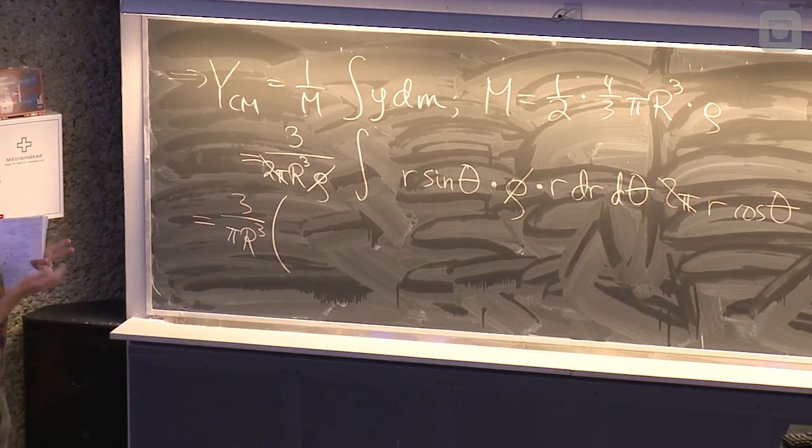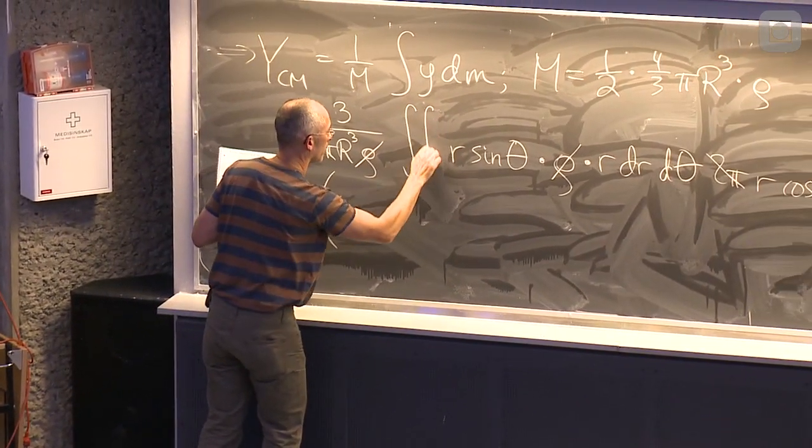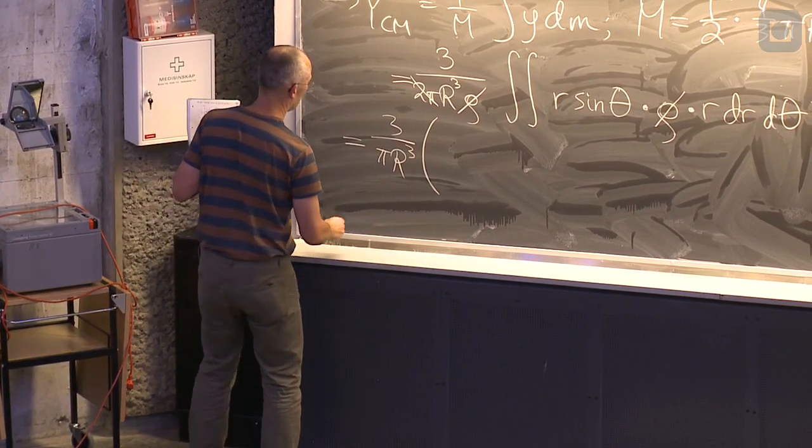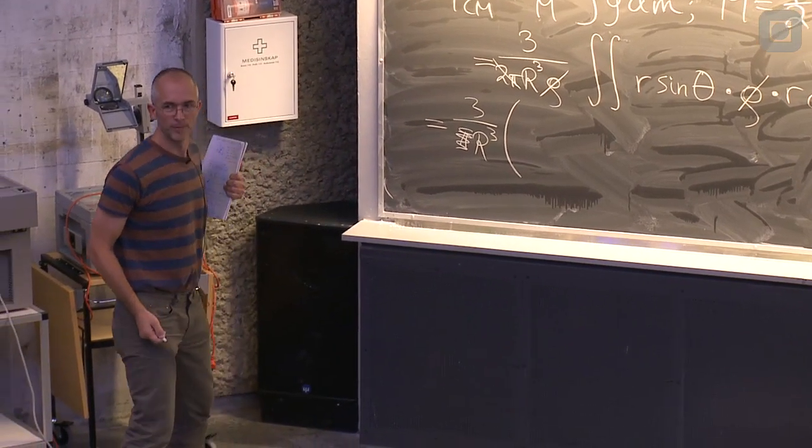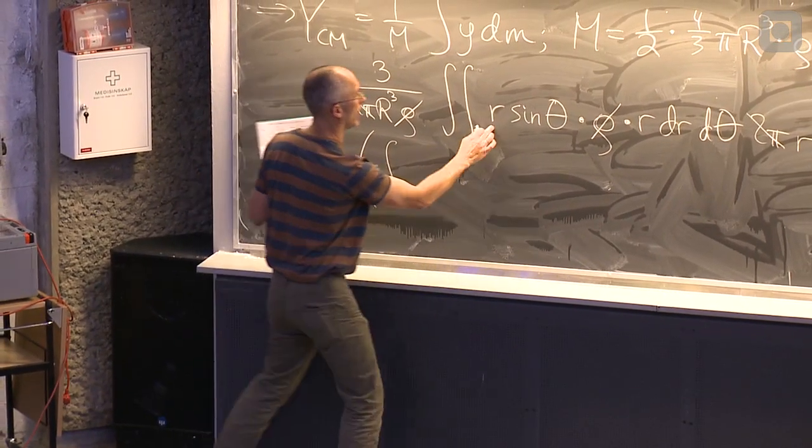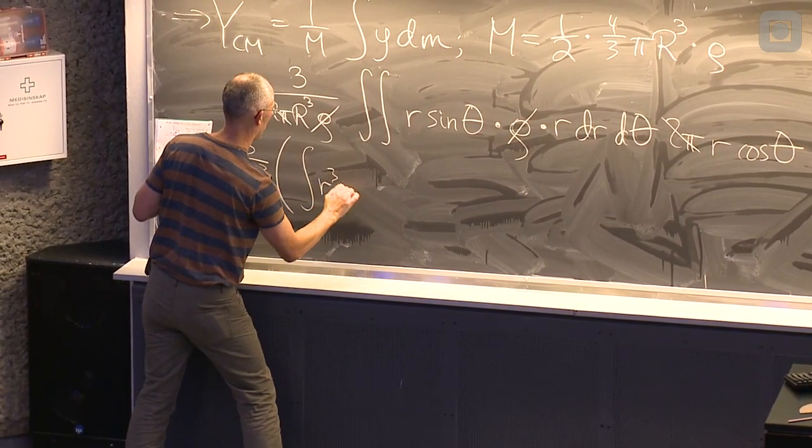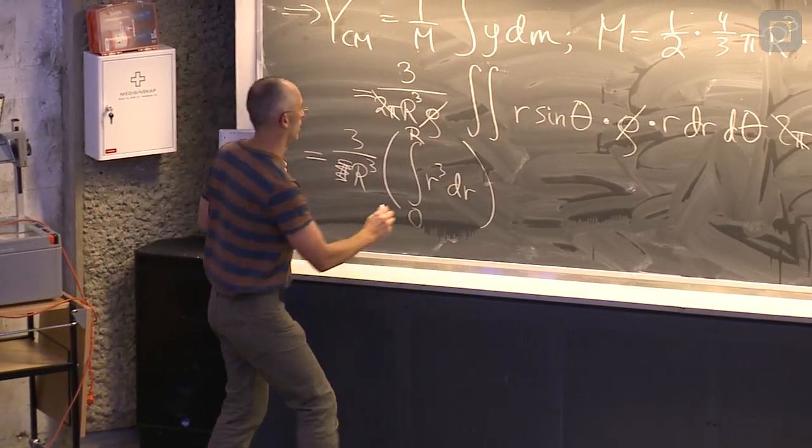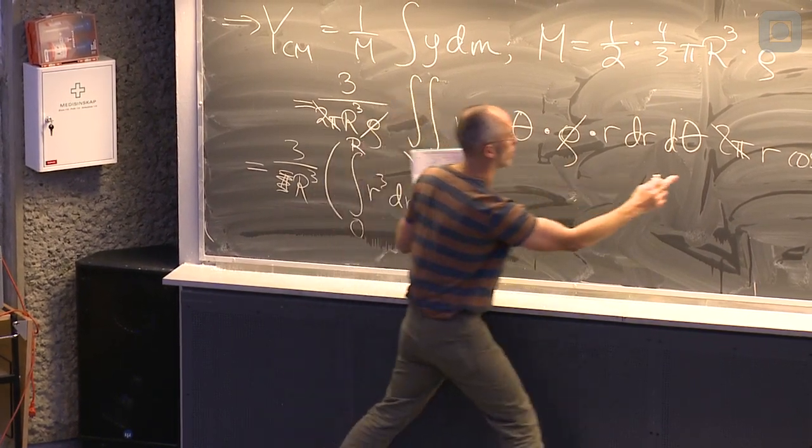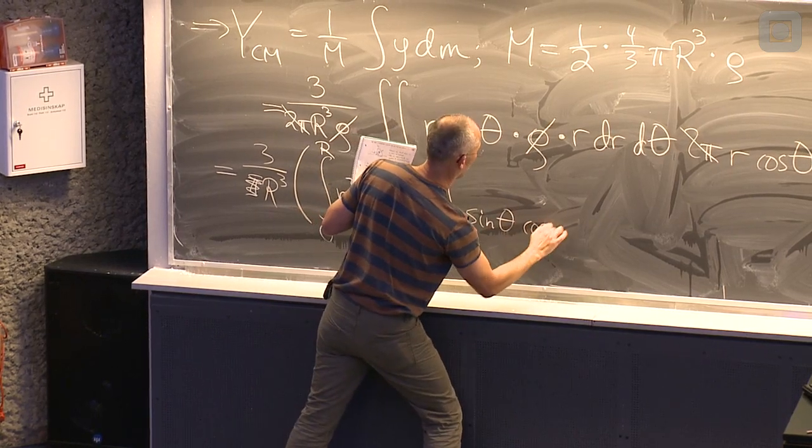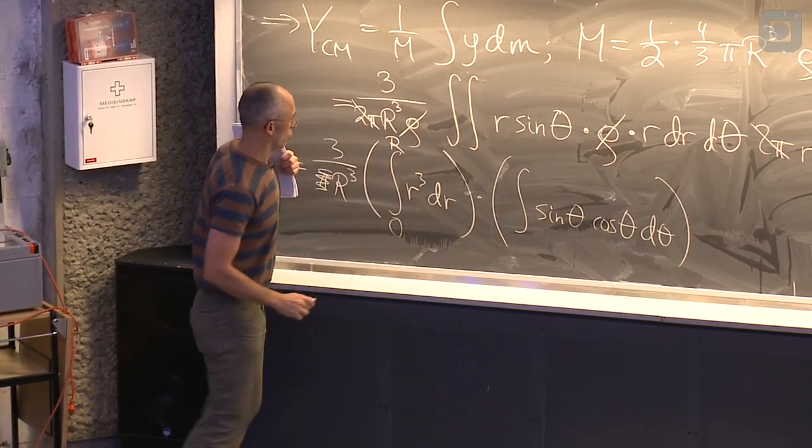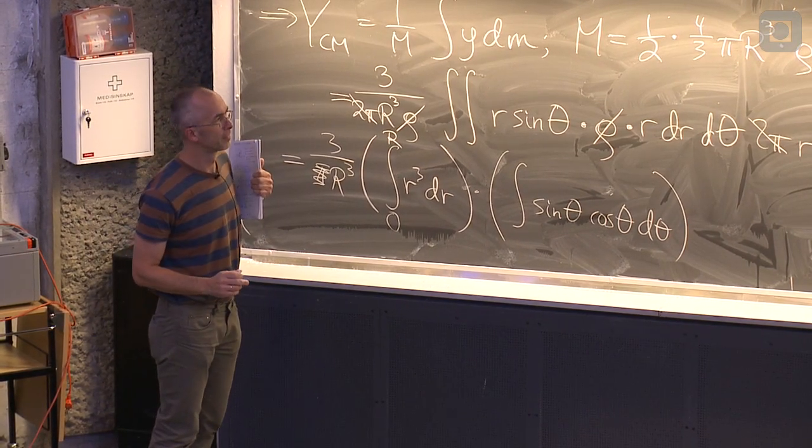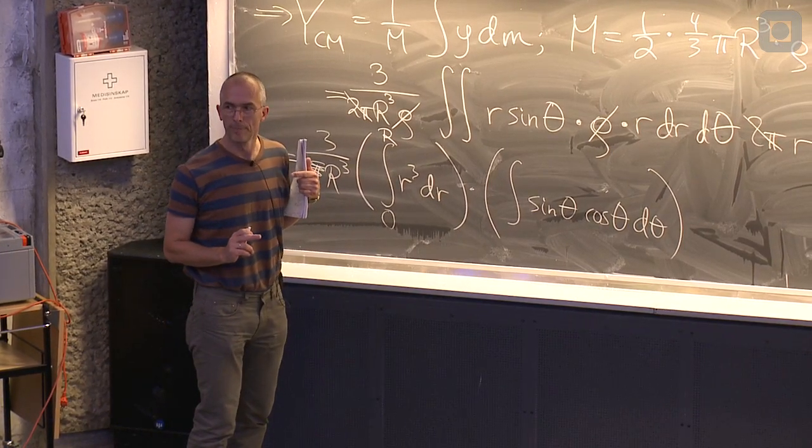Igjen så kan vi samle alle faktorer som inneholder r og theta for seg. Dette er nå egentlig et dobbelt integral. R. Vi har 1, 2, 3 r'er gange dr. Skal vi dekke hele halvkula så får vi gå helt fra innerst til ytterst. Integralet over theta, der står det sinus gange cosinus, og gange d theta. Og fra og til hva? Forslag? En og til. Pi halve. Til pi halve. Og fra null? Ja.